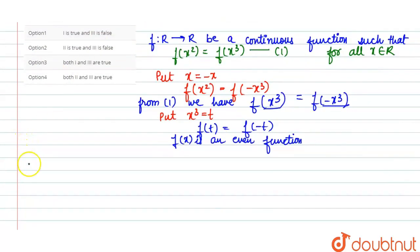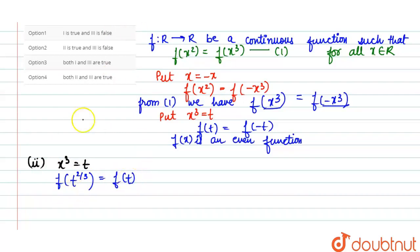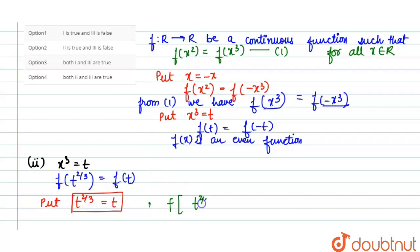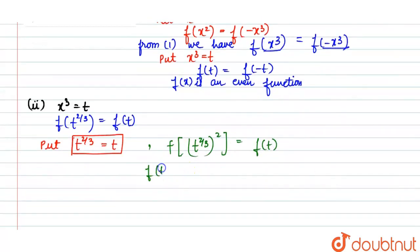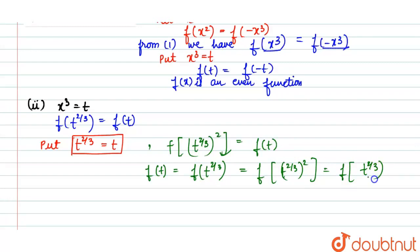Case 2 के लिए x³ की value t लेंगे, तो f(t^(2/3)) = f(t)। अब f(t) की जगह t put करने पर: f(t^(2/3))² = f(t), फिर f(t^(2/3))³ = f(t)। इस तरीके से यह pattern t^(2/3) की power 2, फिर 3 — up to n तक चलेगा।